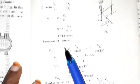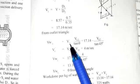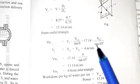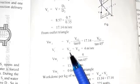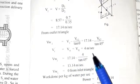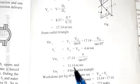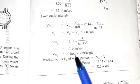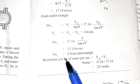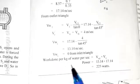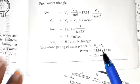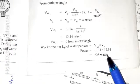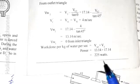From the outlet triangle: VW2 = u2 − VF2/tan(θ) = 17.14 − VF2/tan(45°). Since VF1 = VF2 = 4 m/s, VW2 = 13.14 m/s, and VW1 = 0. Work done per kg of water per second = VW2 × u2 = 13.14 × 17.14 = 225 watts.